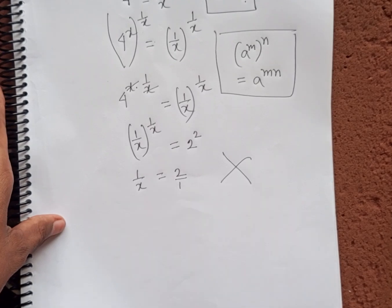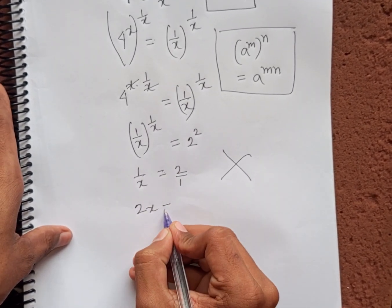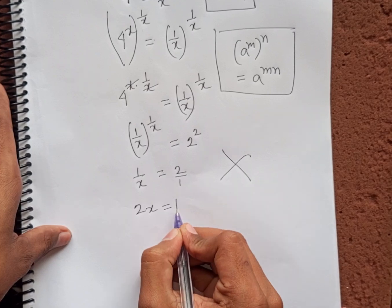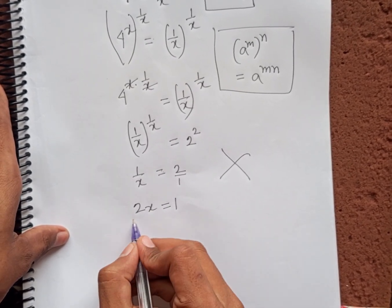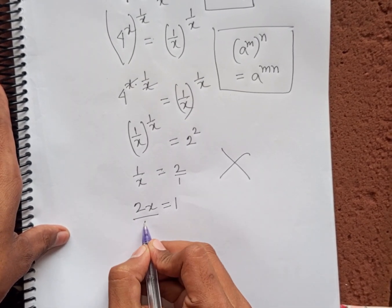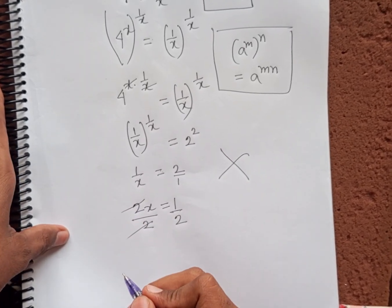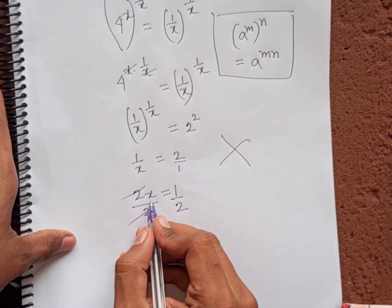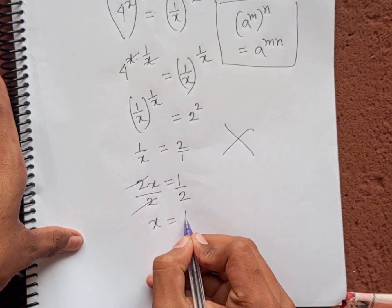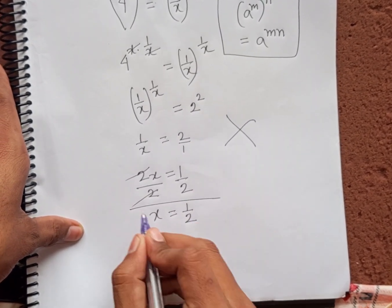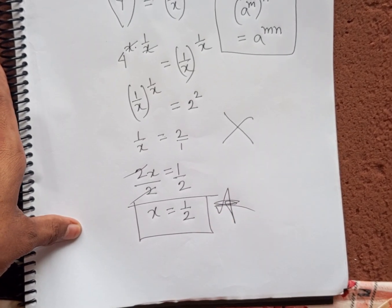So 1 by x equals 2, and since 2 is the same as 2 by 1, we apply cross multiplication: x times 2 equals 2x equals 1 times 1, which is 1. Dividing both sides by 2, x equals 1 by 2. So 1 by 2 is the value of x, and this is our final answer.